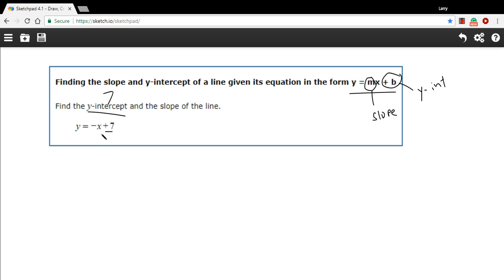Well, when you see just plain old x, the number is 1. 1 times x is still x, so that's the number you should take for the slope. In this case, there's a negative sign, so the slope is negative 1.